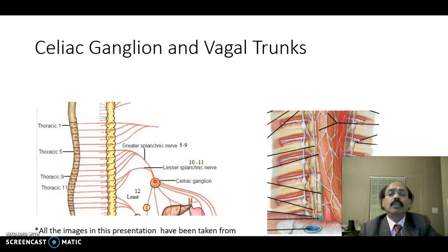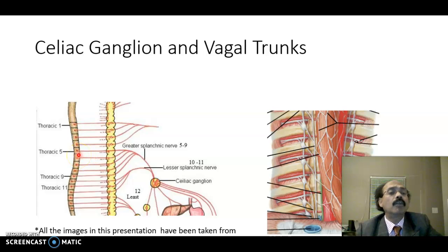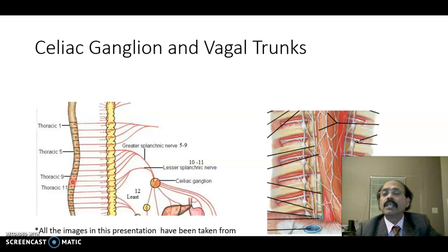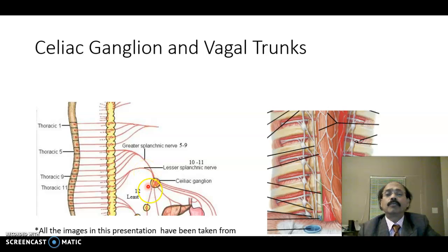The celiac ganglion receives contribution from the greater splanchnic nerve, which arises from T5 to T9 segment of the lateral gray horn of the spinal cord. For the lesser splanchnic nerve, it comes from the lateral gray horn at T10 and T11. So we get contribution from the greater and lesser splanchnic nerves going to the celiac ganglion, from which we get innervation to the stomach, liver, and other structures.